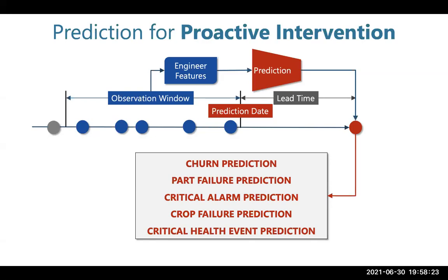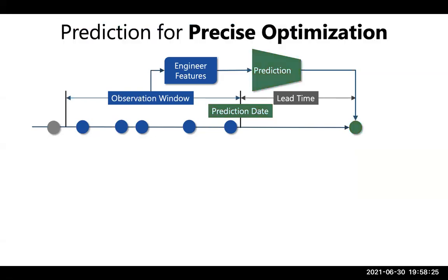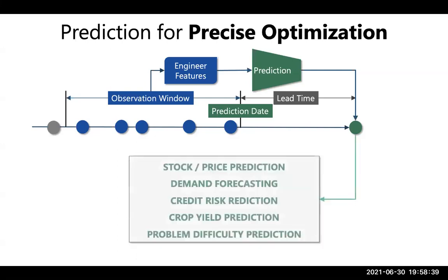The second reason to build prediction models is to optimize your actions knowing the future. The purpose here is not to intervene and change the outcome, but to optimize your decisions given the forecast. For example, in stock market prediction you don't intervene to change whether the stock goes up or down.